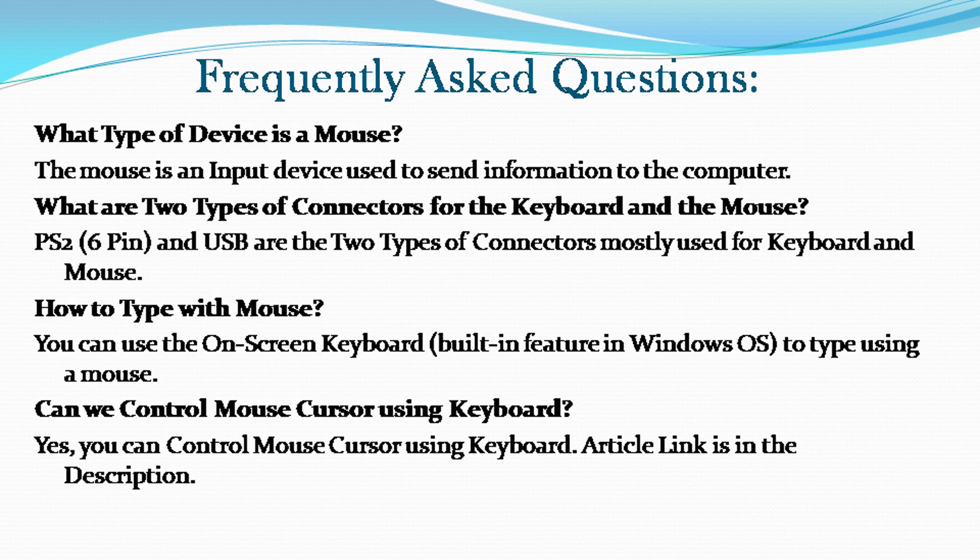What type of device is a mouse? The mouse is an input device used to send information to the computer. What are the two types of connectors for keyboard and mouse? PS2 and USB are the two types of connectors mostly used for keyboard and mouse. How to type with a mouse? You can use the on-screen keyboard, a built-in feature in Windows OS, to type using a mouse. Can we control mouse cursor using keyboard? Yes, you can control the mouse cursor using a keyboard. The article link is in the description.